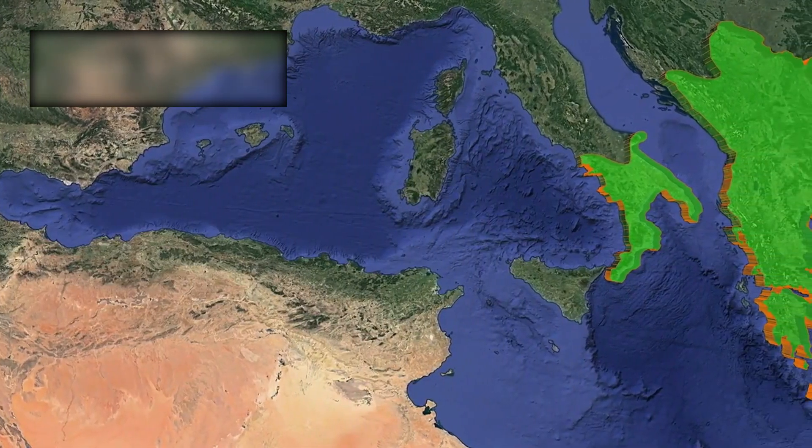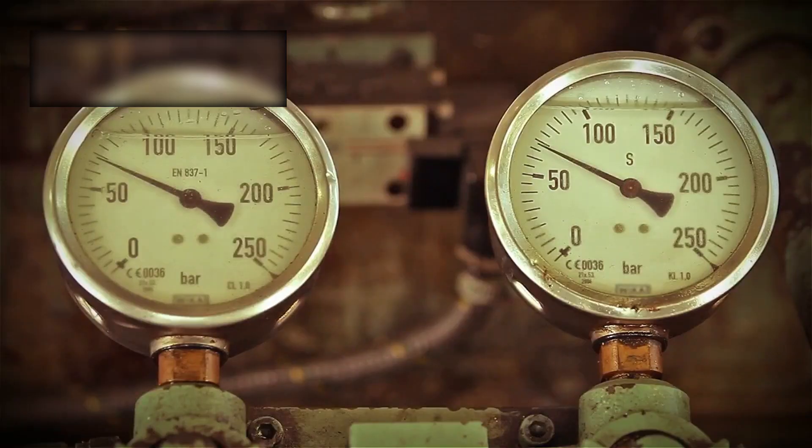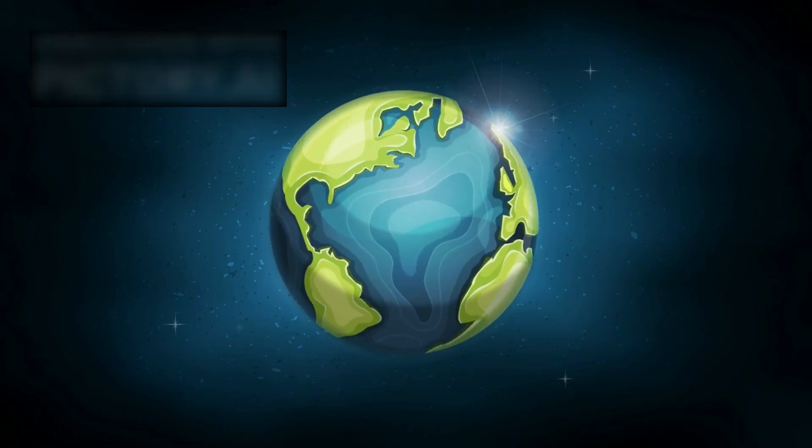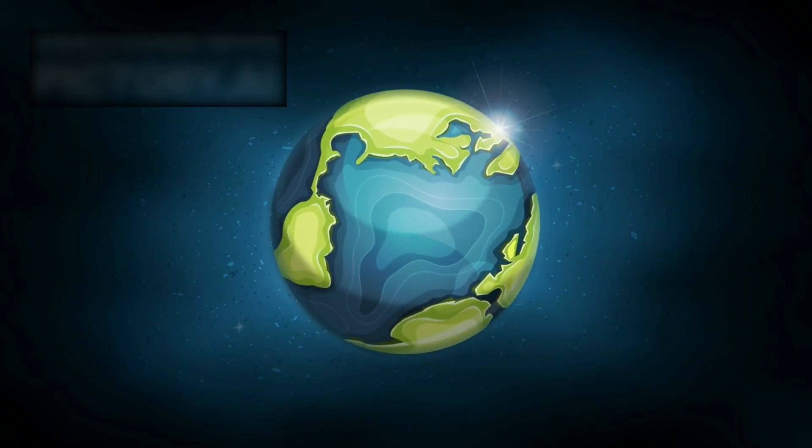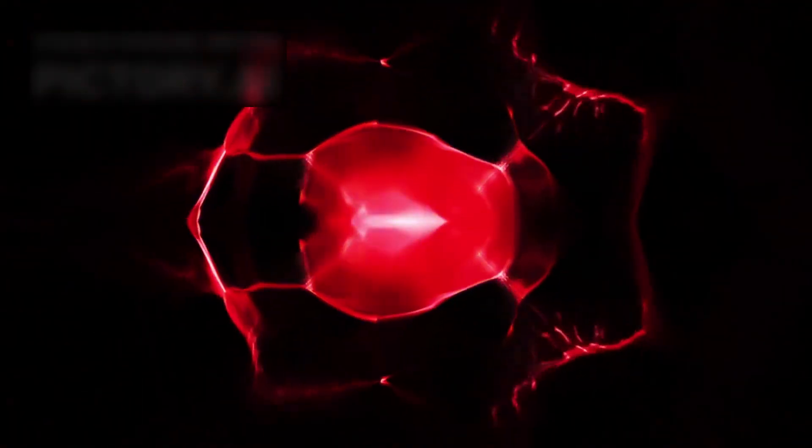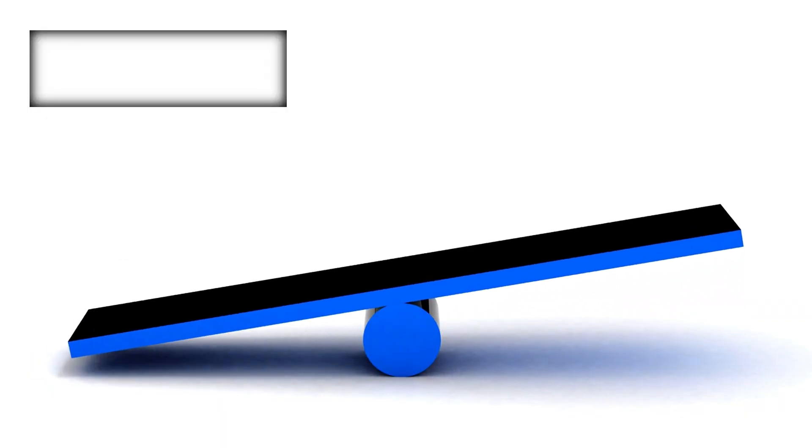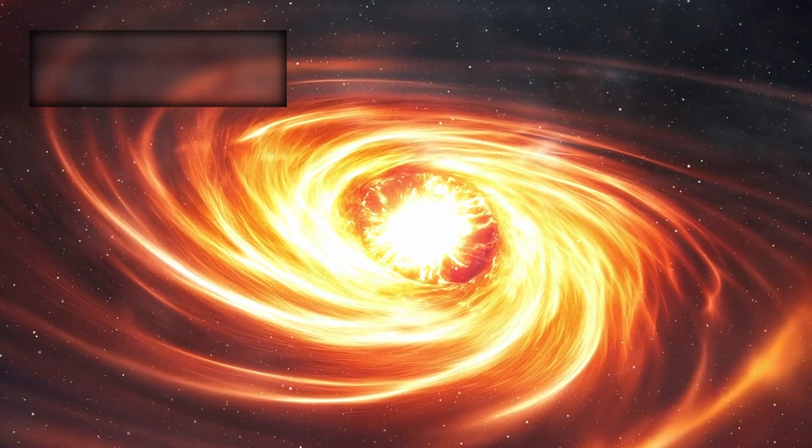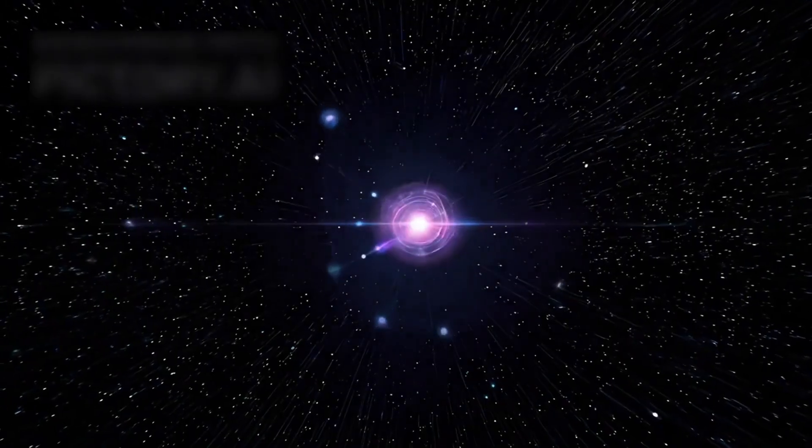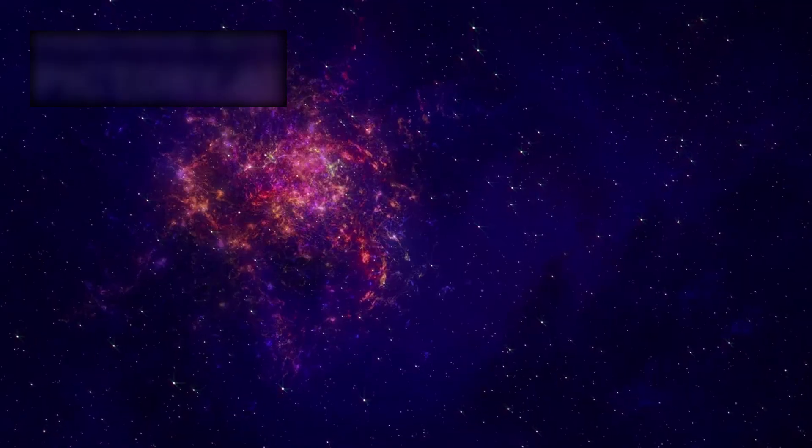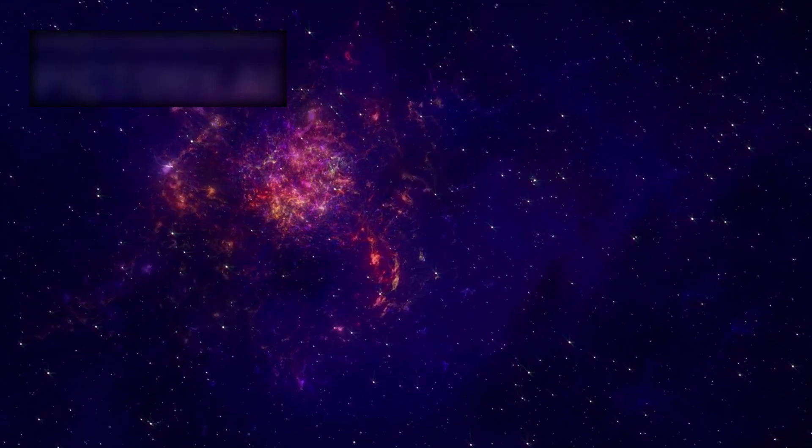If conditions outside this boundary change, pressure builds. The shape of the heliosphere responds. It compresses. It distorts. And when that balance shifts, the effects do not remain at the edge. They propagate inward. Silently. Relentlessly. Cosmic radiation does not arrive as fire or light.